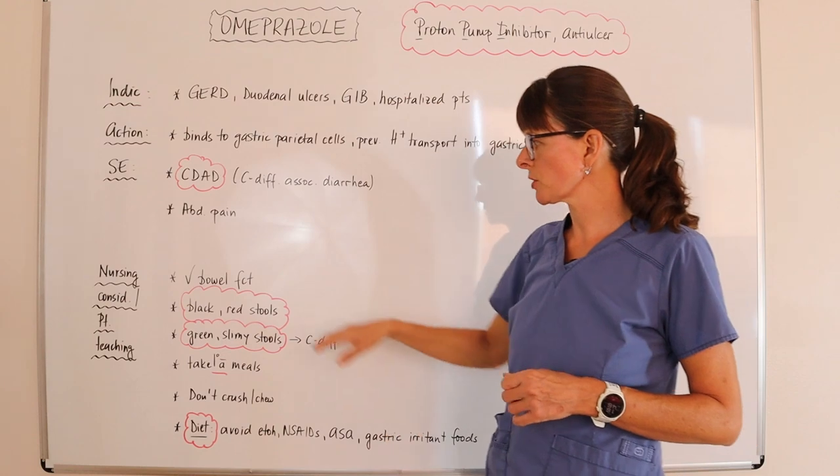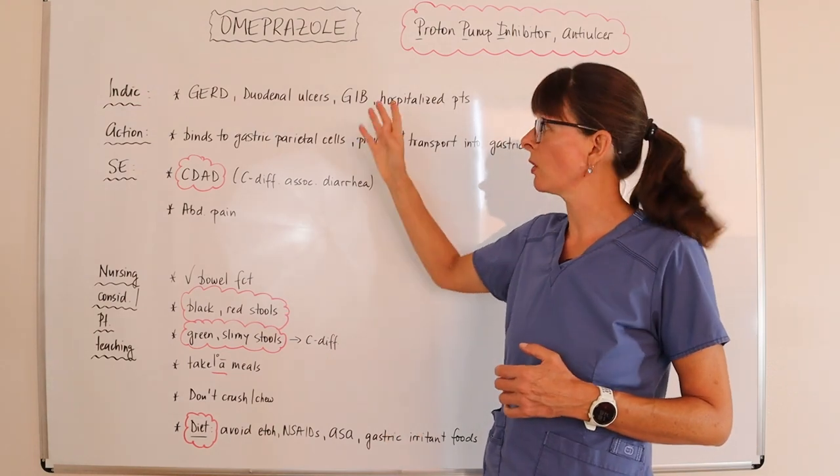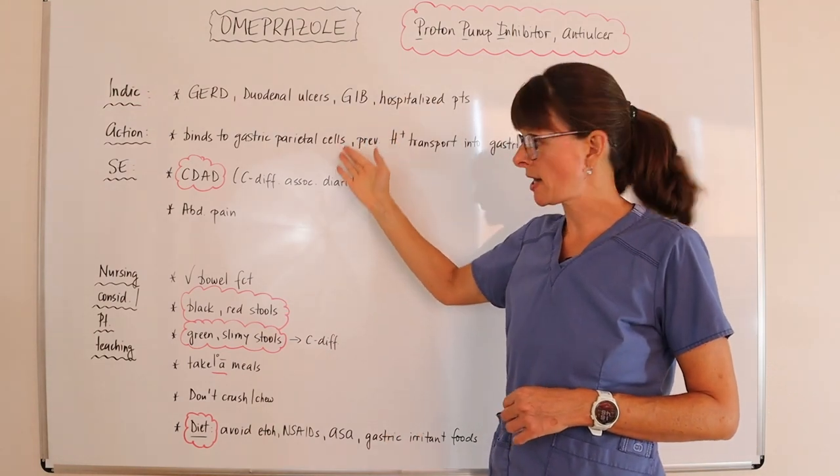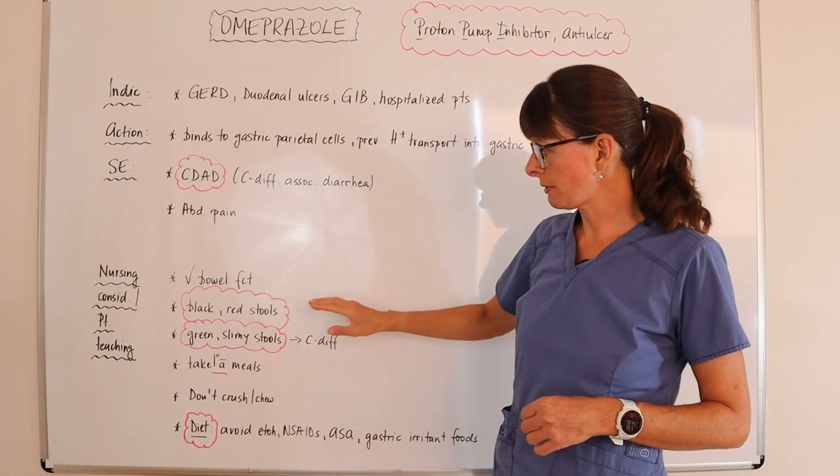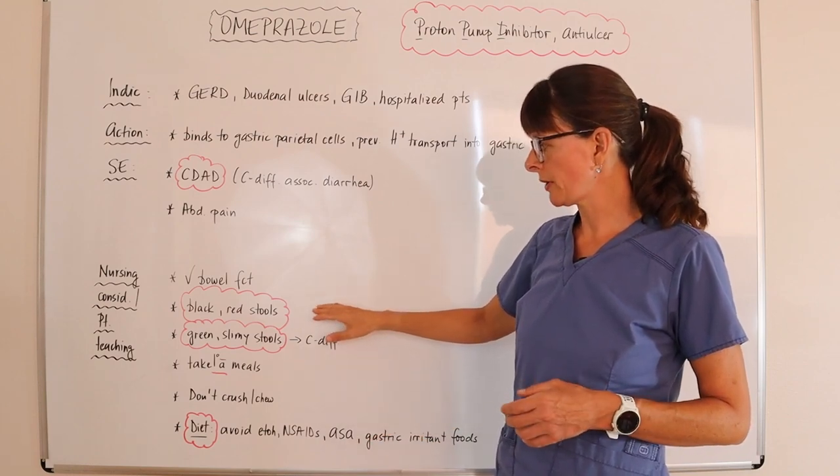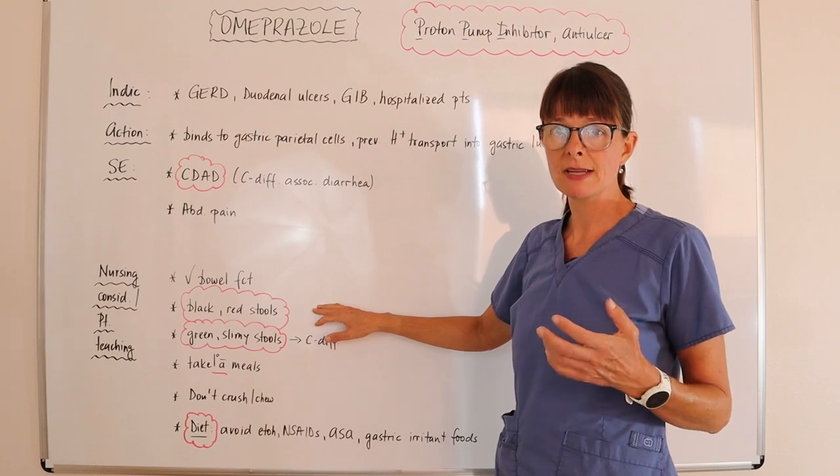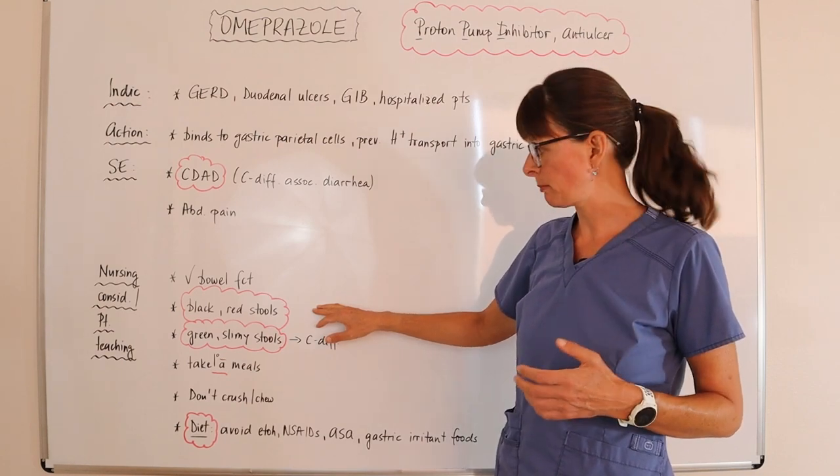For nursing considerations, we want to check the patient's bowel function because we know the medication affects their GI system. We want to check for black or tarry and red stool, which usually means signs and symptoms of GI bleeding.